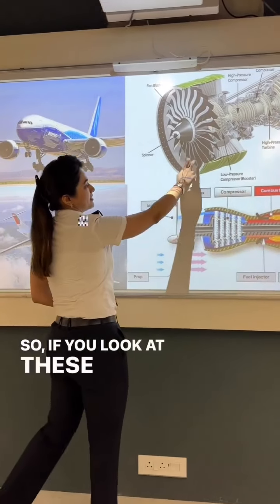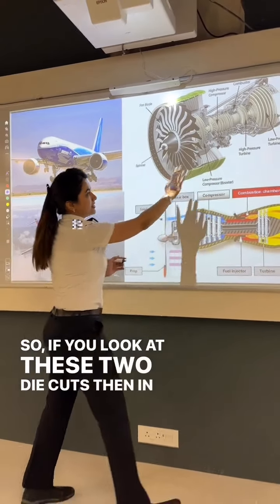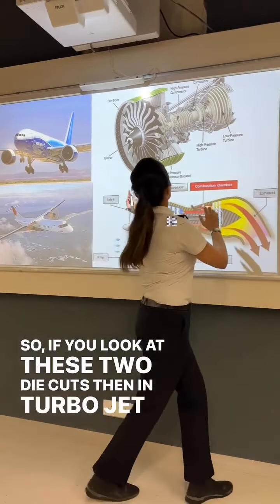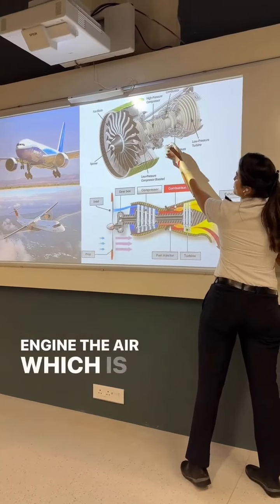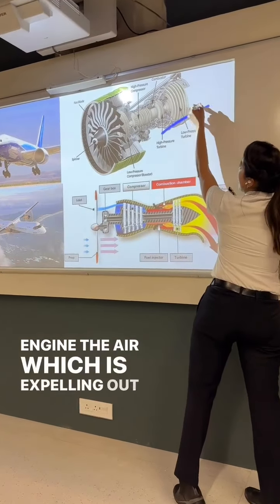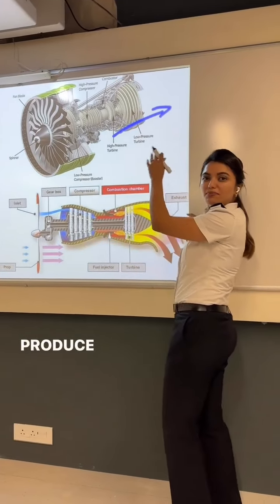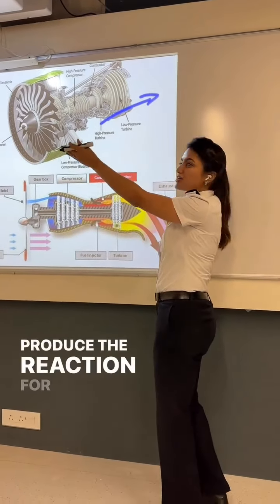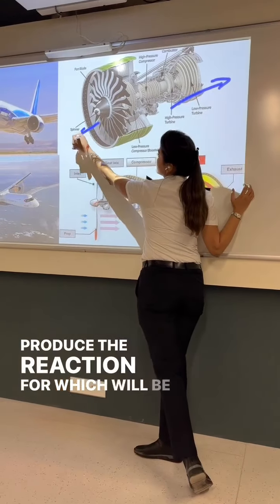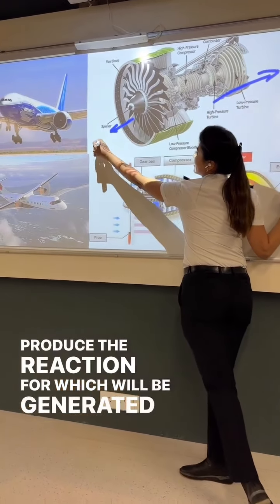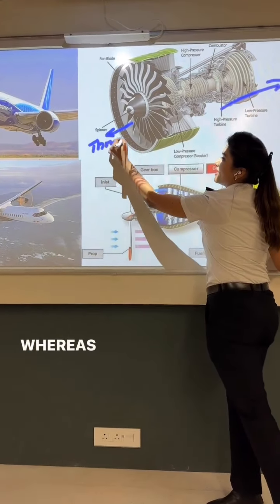If you look at these two diagrams, then in a turbojet engine, the air which is expelled out from the engine will produce the reaction forward, which will be generated as thrust.